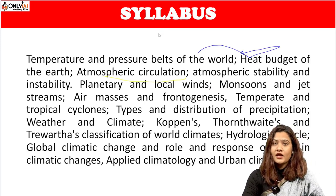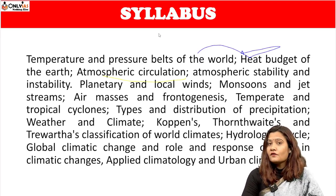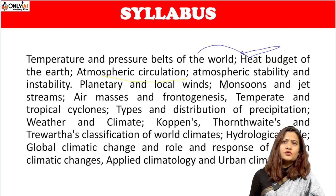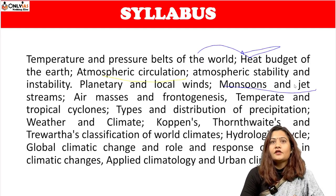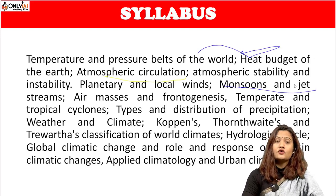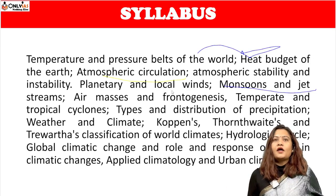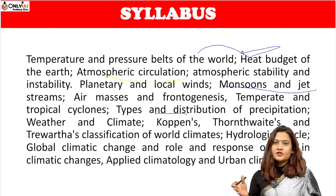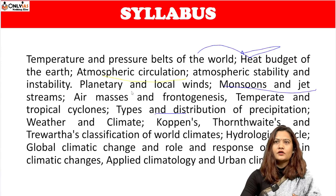What is atmospheric instability and its impact on planetary and local winds? Planetary wind includes trade winds — north-easterly and south-easterly trade winds. Local winds originate in local areas. Monsoon and jet streams are a very important topic, and monsoon and jet streams also appear in Paper 2 on the physical setting of India. Then we have air masses and frontogenesis, which is a very simple but important topic.